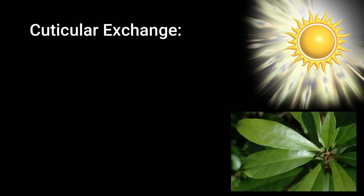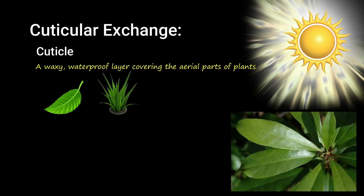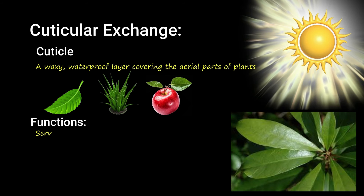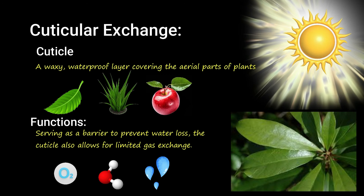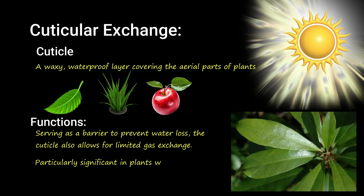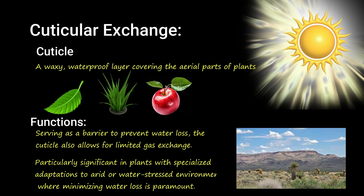The last one is exchange through the cuticle. The cuticle is a waxy, waterproof layer covering the aerial parts of plants, including leaves, stems, and fruits. While primarily serving as a barrier to prevent water loss, the cuticle also allows for limited gas exchange. Small molecules such as oxygen, carbon dioxide, and water vapor can diffuse through the cuticle, albeit at a slower rate compared to stomata or lenticels. This exchange becomes particularly significant in plants with specialized adaptations to arid or water-stressed environments, where minimizing water loss is paramount.